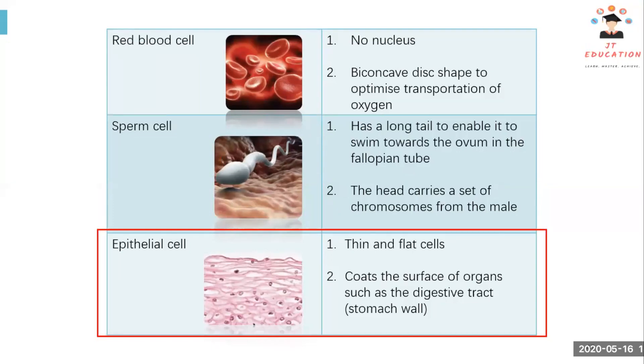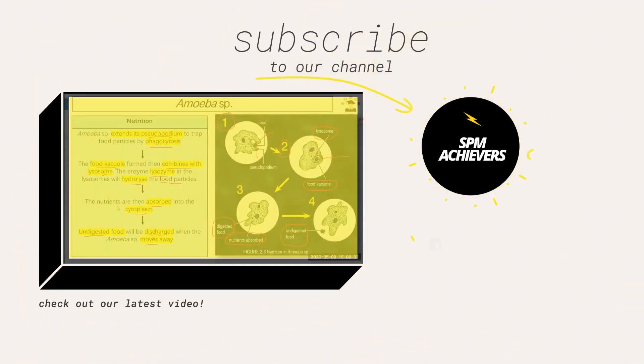Lastly, the epithelial cell is thin and flat, as shown in the figure. The epithelial cell helps to coat the surface of organs, like the digestive tract.